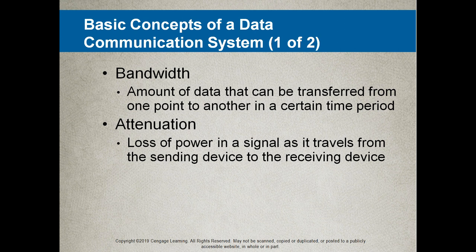For example, if you want to transmit one megabit per second, you would use a certain amount of bandwidth. If you want to transmit two megabits per second, you will need twice the amount of bandwidth. So the more data you transmit and the faster you transmit, the more bandwidth you need.